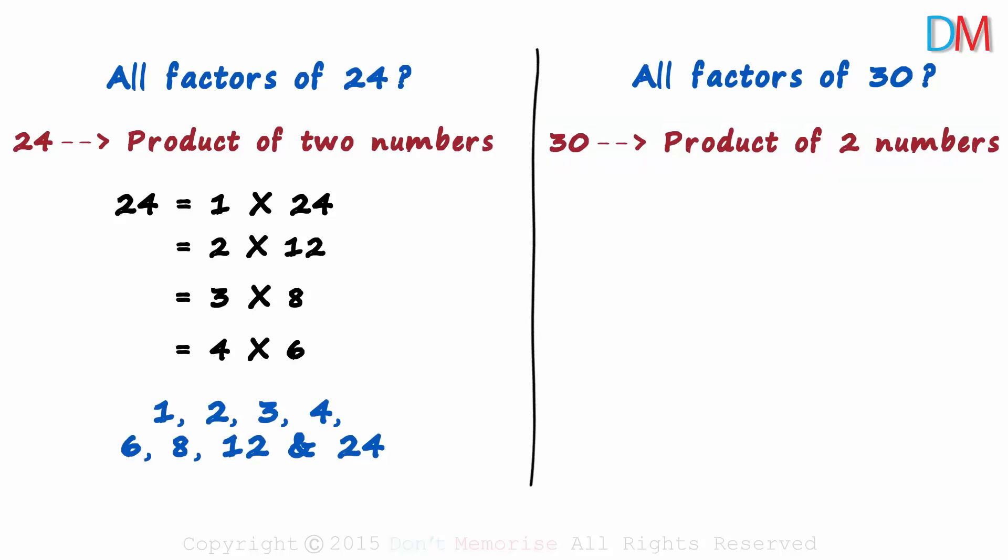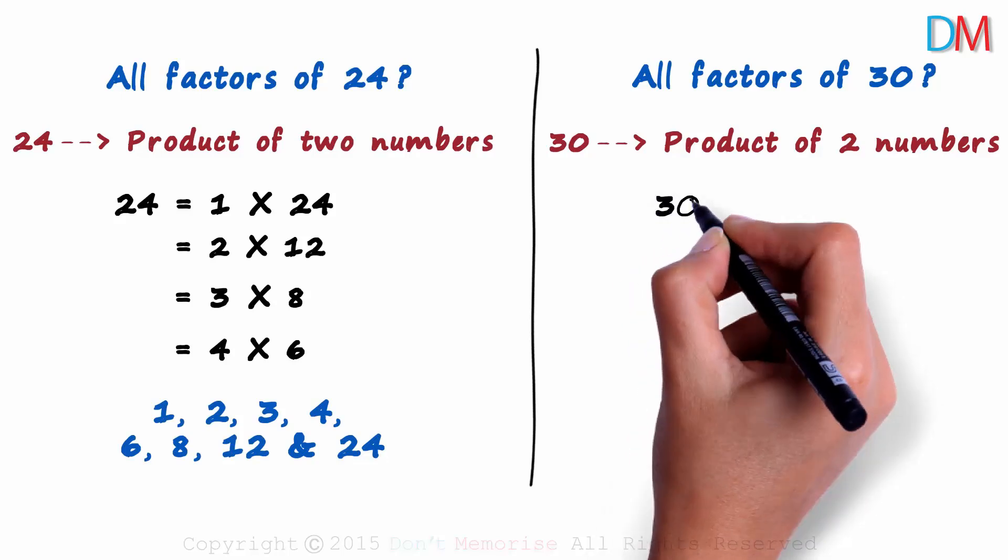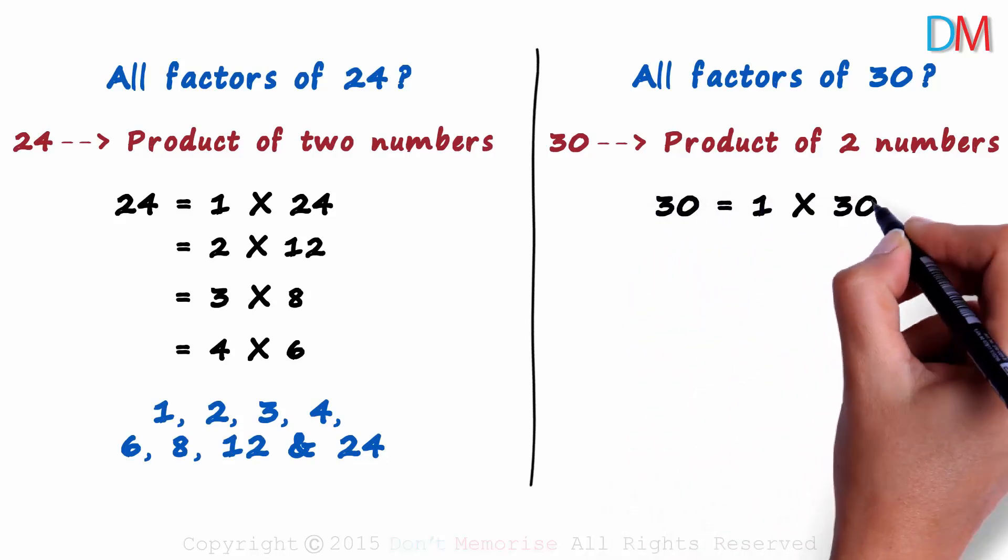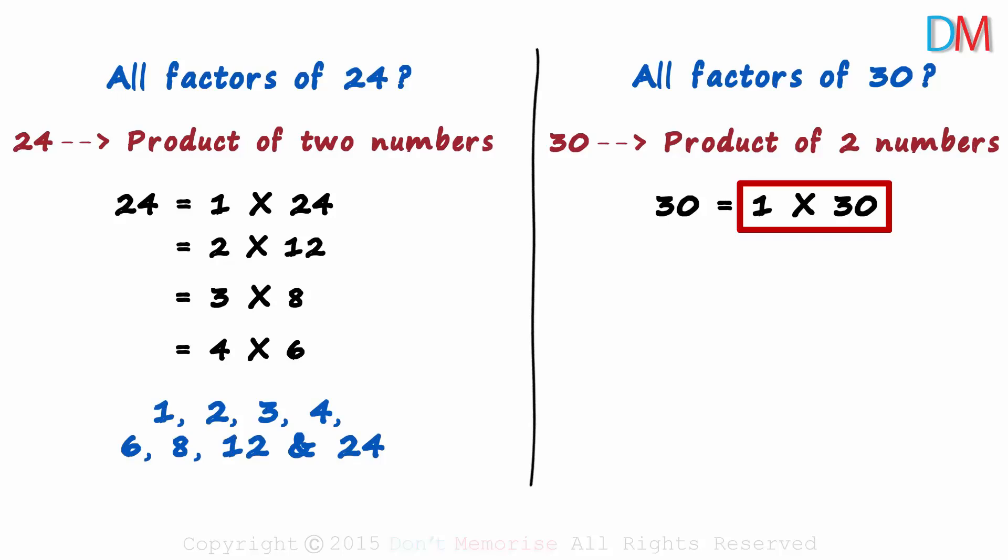I will be telling you the answer in some time. Meanwhile, you can try writing down the combinations in your notebook. We can start off with the number 1. 30 can be written as 1 multiplied by 30. This is the simplest and the most obvious combination. 1 is always a factor of all numbers.